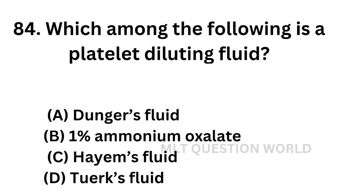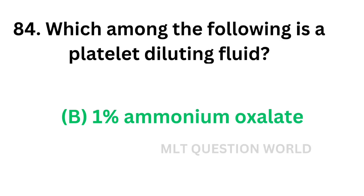Question number 84: Which of the following is a platelet diluting fluid? Option A: Dunger's fluid. Option B: 1% ammonium oxalate. Option C: Hayem's fluid. Option D: Turk's fluid. Dunger's fluid is used for absolute eosinophil count. 1% ammonium oxalate is used as platelet diluting fluid. Hayem's fluid is RBC diluting fluid. Turk's fluid is WBC diluting fluid. So the correct answer is Option B, 1% ammonium oxalate — platelet diluting fluid is 1% ammonium oxalate.